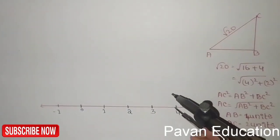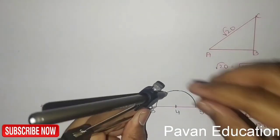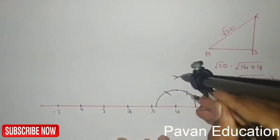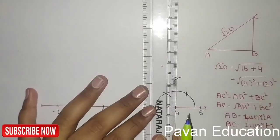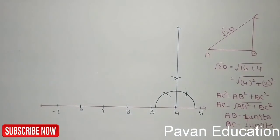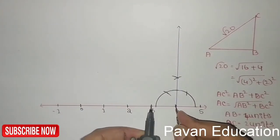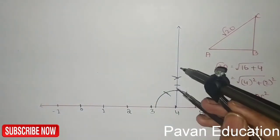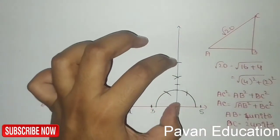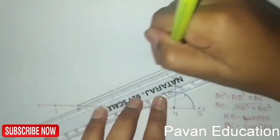Draw the perpendicular here. Draw a semicircle. Take a compass with the length of 1 unit and mark it out — it is 1 unit, then another 1 unit, so if you add these we get 2 units. Now join this to 0 to get the right angle triangle.